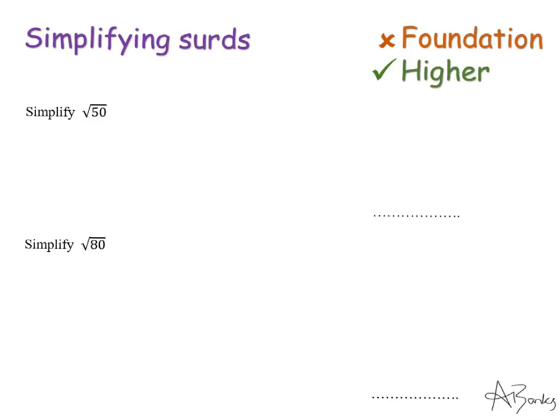So the first question I've got is simplify root 50. Now if the number underneath the square root was a square number, so for example I had root 49 the answer would just be 7 and that would be a really basic skill. The reason this is harder is because the number underneath the root isn't a square number. But if I can split it up into a square number and some other number then I'll be able to simplify it.